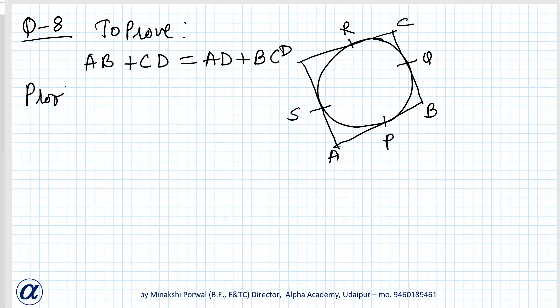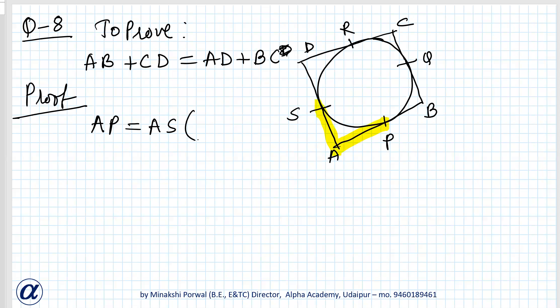Proof: From point A, AB equals AS, because the lengths of tangents from an external point are equal (Theorem 10.2). From point B, BP equals BQ, by the same reason — lengths of tangents from an external point are equal.